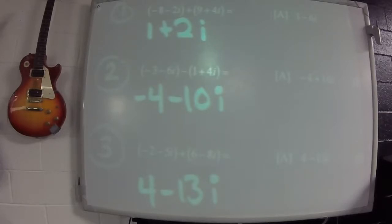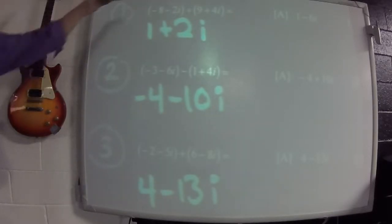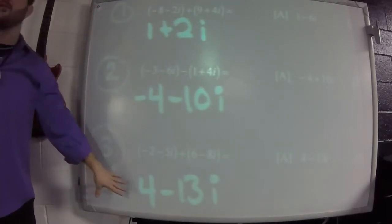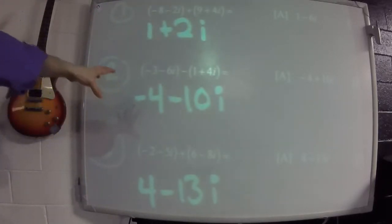Okay, if you've already got them, you can look up there and check. I wrote underneath them what they're all supposed to be. Okay, so these are the three you should have gotten right here. 1 plus 2i, negative 4 minus 10i, 4 minus 13i. Anybody disputing those answers?